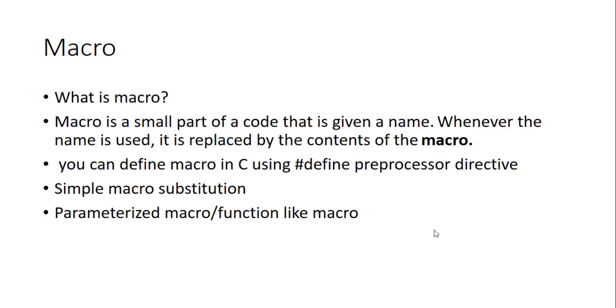So what is meant by macro? Macro is a small part of code that is given a name. Whenever the name is used, it is replaced by the contents of the macro. This concept is important - whenever the name is used, it is replaced by the contents of the macro.